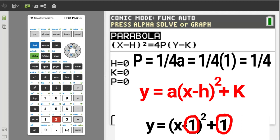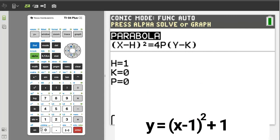However, we know p is equal to 1 over 4a. A is 1, thus p equals 1 fourth or 0.25. h is 1, enter. k is 1, enter. And p is 1 divided by 4, enter.